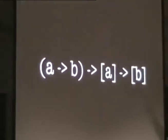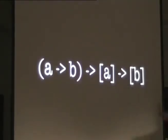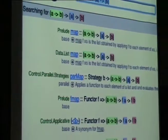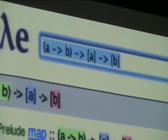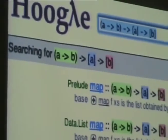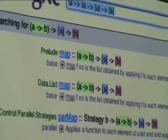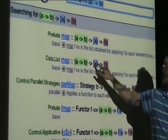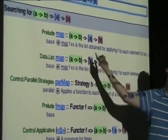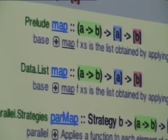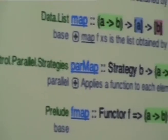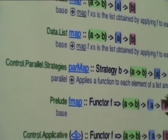For example, we're looking for a function that takes a function from A to B, a list of A's, and gives us a list of B's. We know it's `map` — maybe we didn't know the name, but we know the operation. Hoogle pulls out the parts of the function we're searching for and highlights them. It also handles flipped arguments — if the list of A's came first, it knows that's equivalent. It pulls up `Prelude.map` first as an exact match, and also `Data.List`.